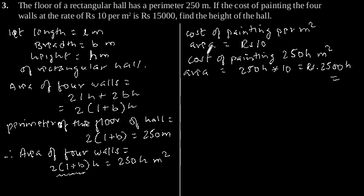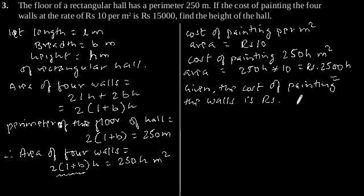And as given in the question, cost of painting the wall is Rs 15,000. Therefore we can say 15,000 is equal to 2500H, which gives H is equal to 6 meters.